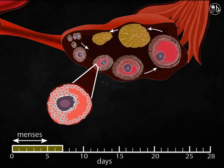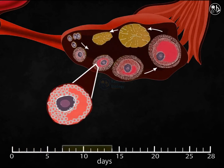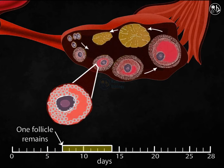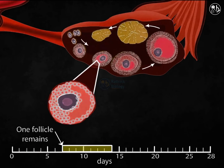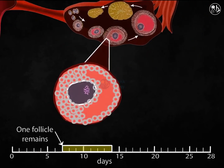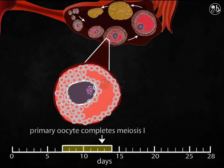This results in thousands of follicle cells in a single follicle. All but one of the developing follicles begins to deteriorate by day seven. The surviving follicle develops, and its follicle cells continue to maintain it while also supplying it with proteins and informational molecules necessary for early stages of development.